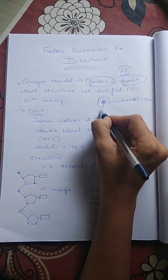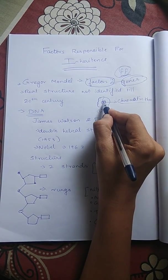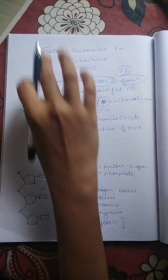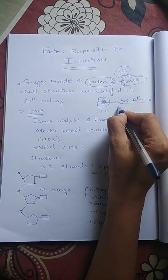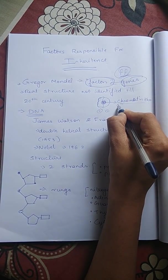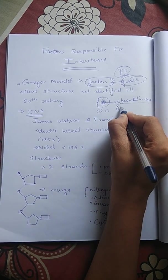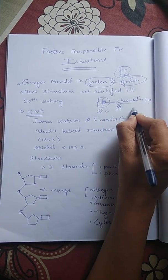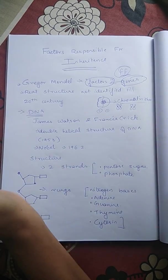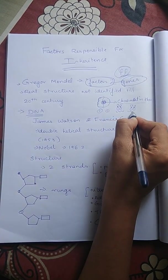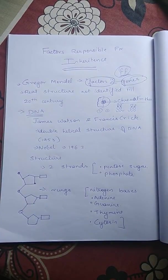When a cell splits into two cells, this chromatin thread is full of entanglement. These structures are known as chromosomes.